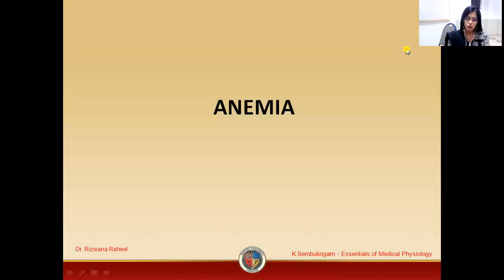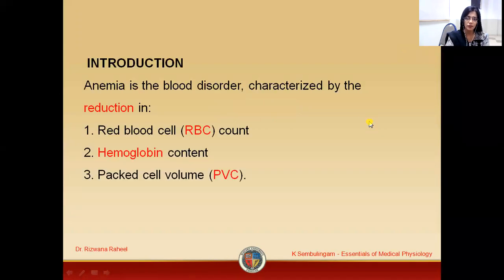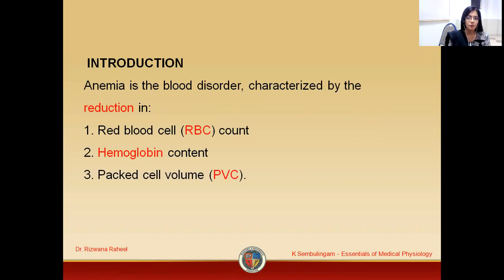Now students, we are going to discuss anemia — what is anemia and what happens in anemia. Anemia is a blood disorder that is characterized by reduction in RBC, that is red blood cell count. RBCs are also known as erythrocytes. In it there is reduction in hemoglobin content and also there is decrease in packed cell volume, that is PCV.